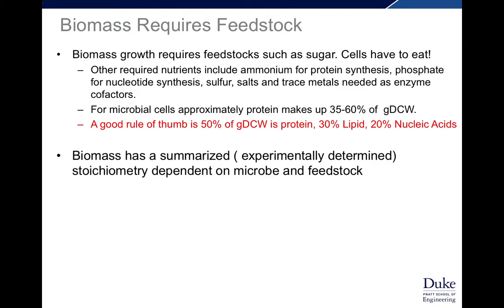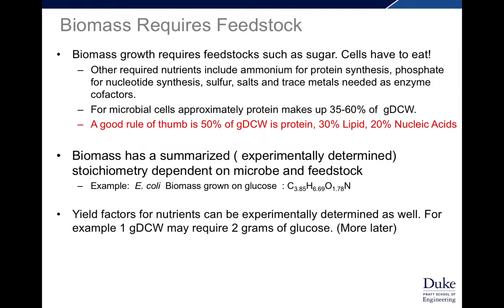Biomass can also be summarized — experimentally determined — as a chemical formula with a particular stoichiometry. For example, E. coli biomass grown on glucose has the formula C₃.₈₅H₆.₆₉O₁.₇₈N₁. A yield factor for any nutrient can be experimentally determined as well. For example, one gram dry cell weight would require two grams of glucose, and we'll talk more about yield coefficients later.